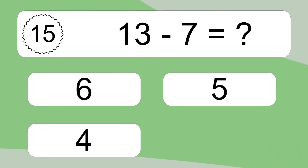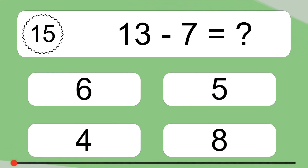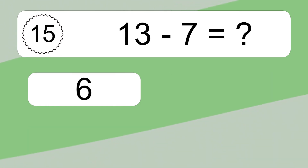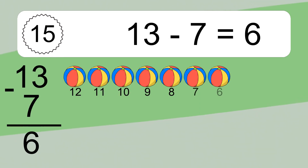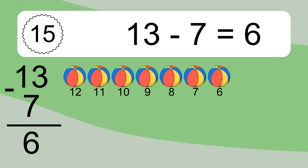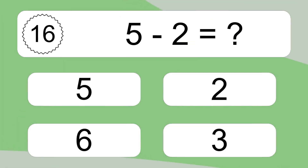13 minus 7 equals what? 13 minus 7 equals 6. Let's count it: 12, 11, 10, 9, 8, 7, 6. 5 minus 2 equals what?